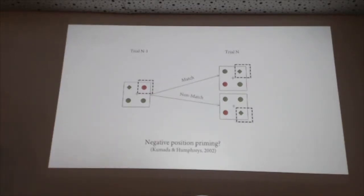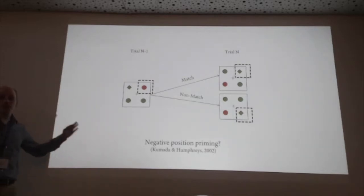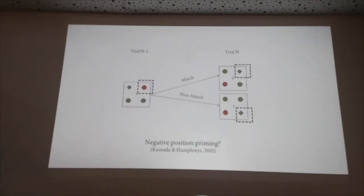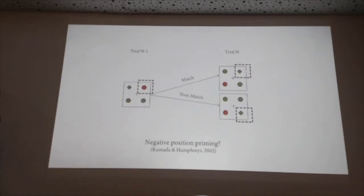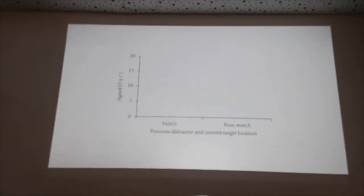There's behavioral evidence that on a match trial it's a little bit harder to respond with a key press — you just had a distractor at that location, so you may have some kind of inhibitory tag there that you have to overcome to select a target. We looked at this and measured the initial trajectory angle — the same idea as curvature but just at 20% of the movement — as a function of whether there was a match or non-match.